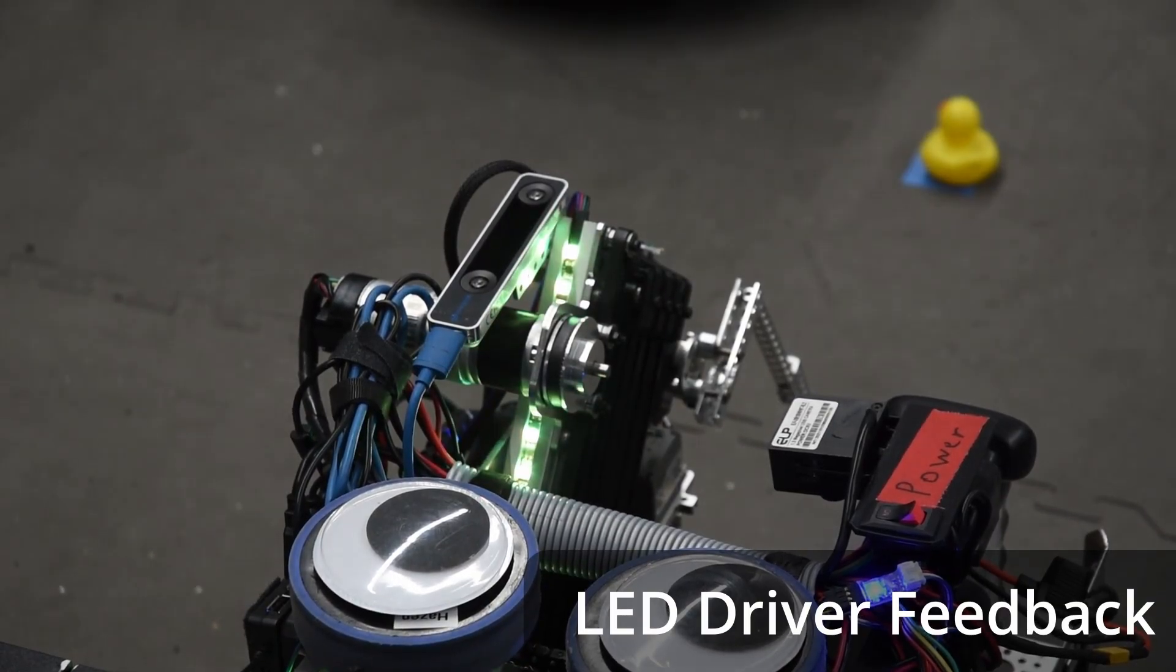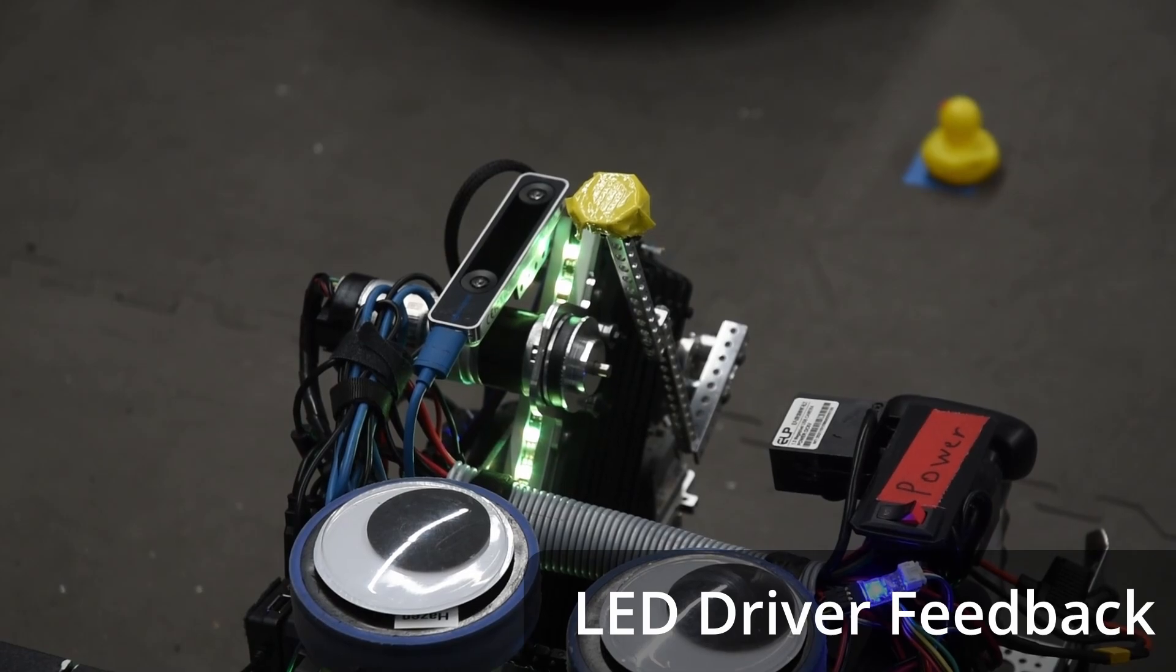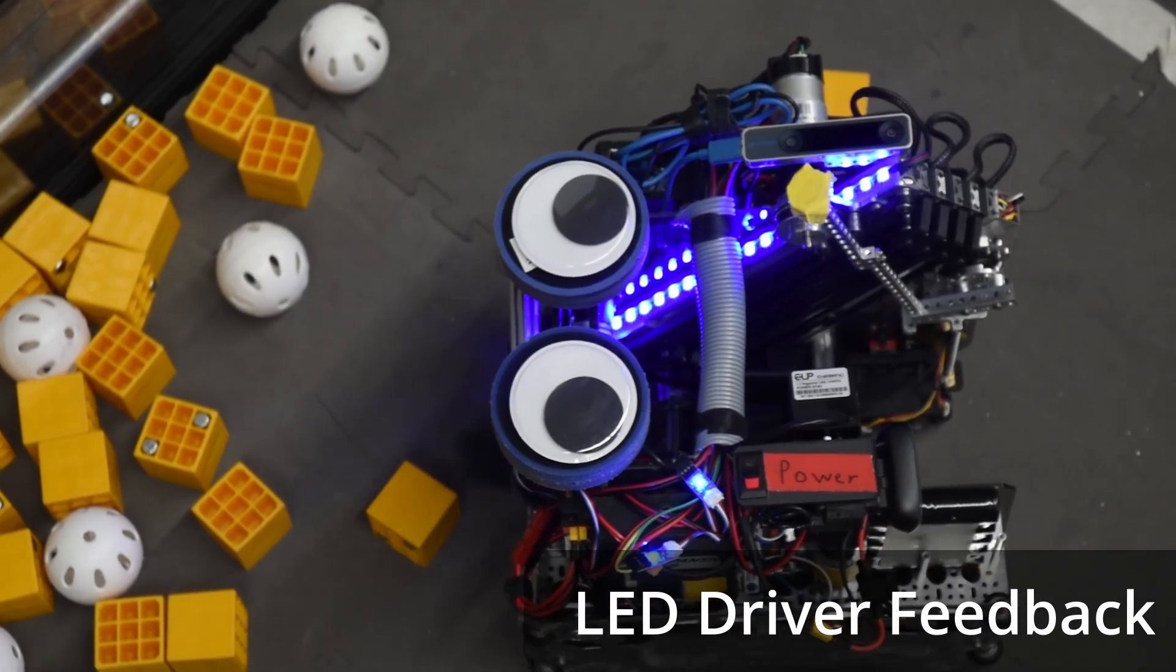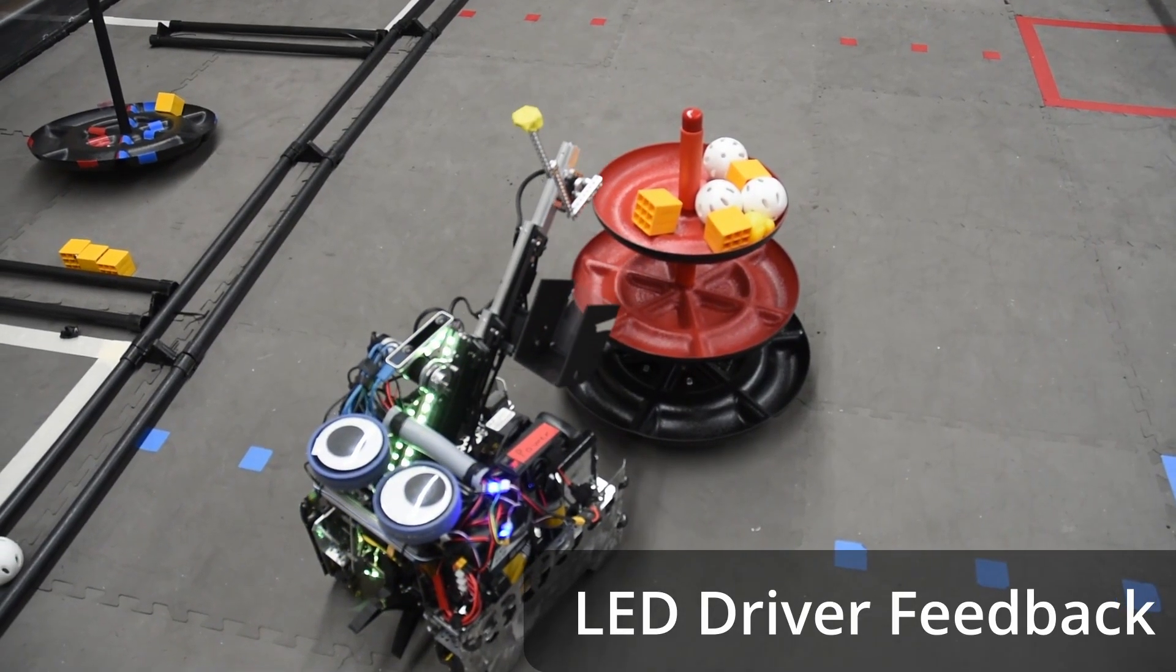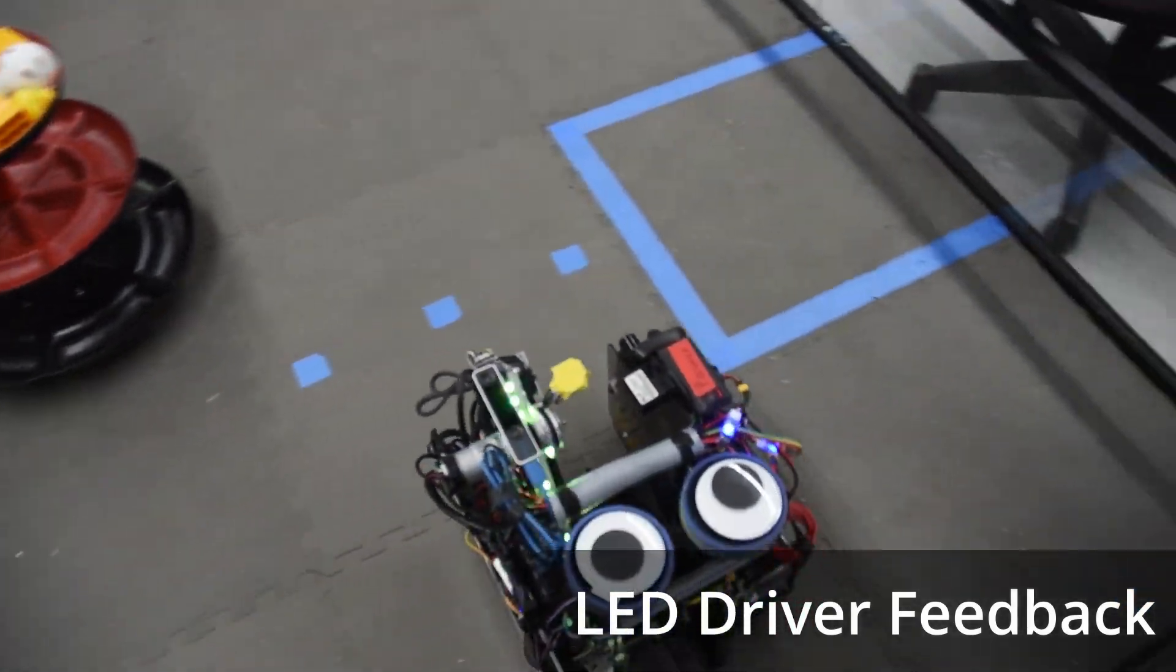The robot uses lights and controller feedback to notify the driver when initialization is finished, when a piece of freight has been intaken, and when there is six seconds left until endgame.